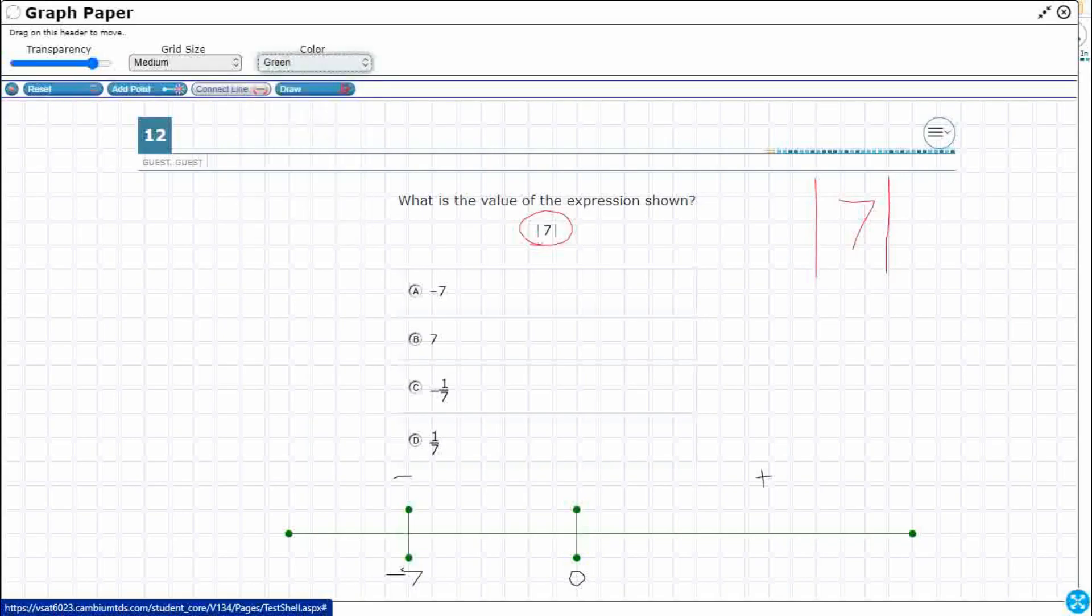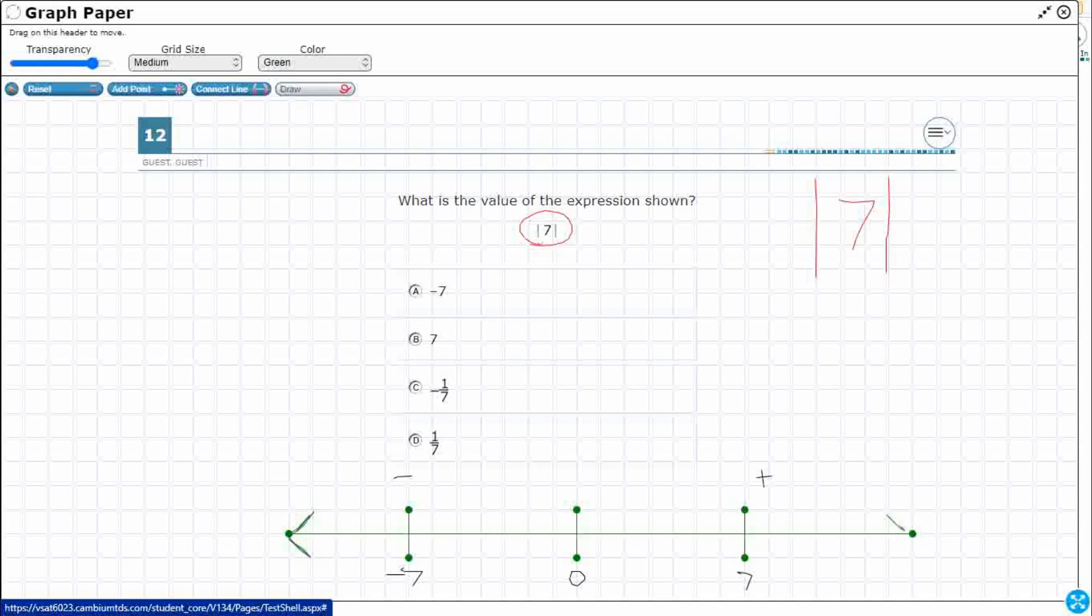If I want to do my positive 7, we have 1, 2, 3, 4, 5, 6, 7. That's going to go right there. Obviously, these numbers continue to move in infinity in both directions. So I'll just kind of put some little arrow markers right there.